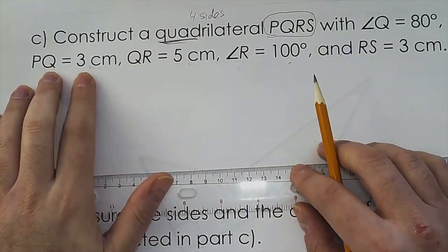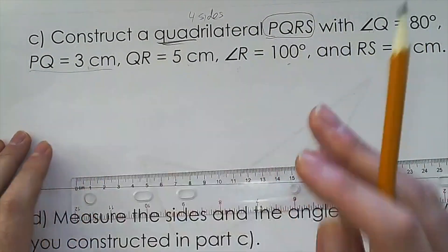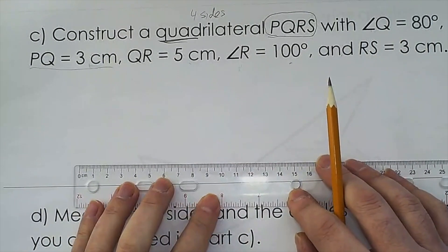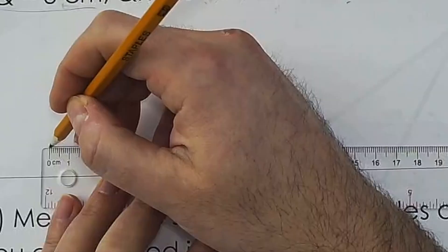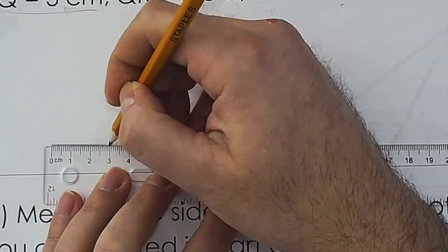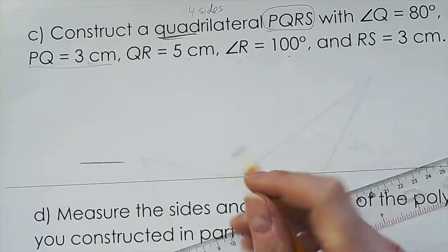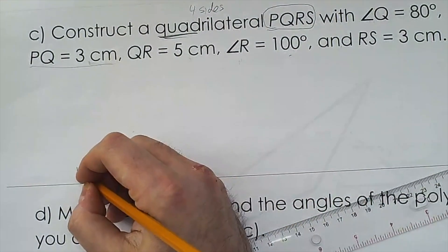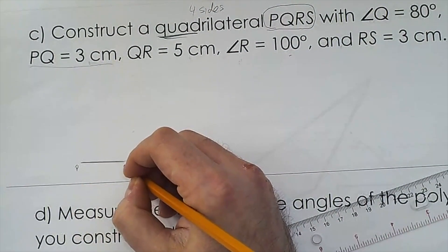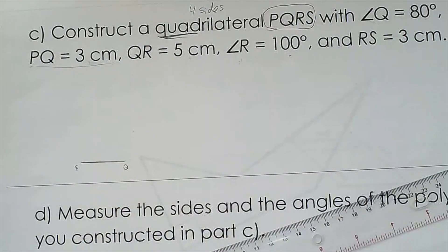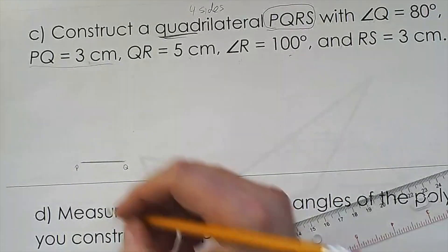So I'm going to start with PQ, it's the first one, let's do it. So this has to be 3 centimeters long. So PQ is 3 centimeters long. I'm just going to label it P, I'm going to label it Q, and I'm going to anticipate that I have made a few mistakes along the way.